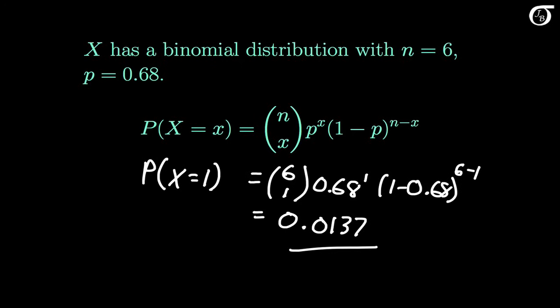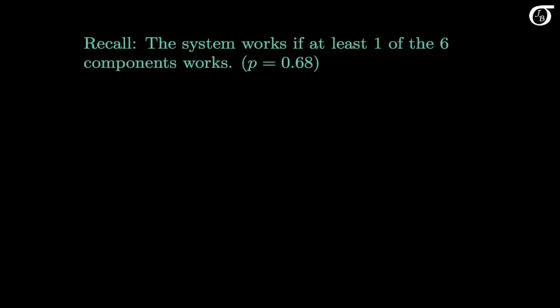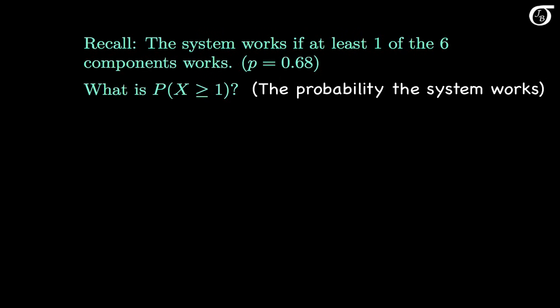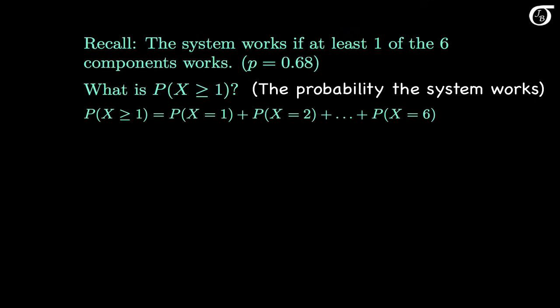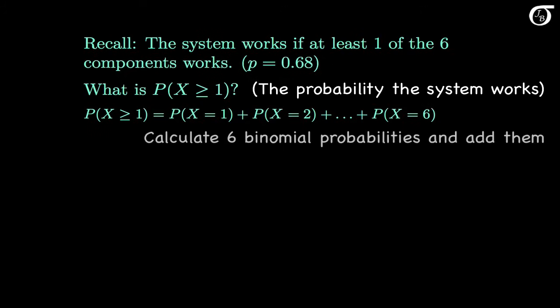But that's not really a very interesting question in this scenario — let's look at a more important question. Recall that the system works as long as at least one of the six components works, so the most important question is: what is the probability x is at least 1? This is the probability that the system works. We could calculate the sum of probabilities from 1 through 6, but there's an easier way.